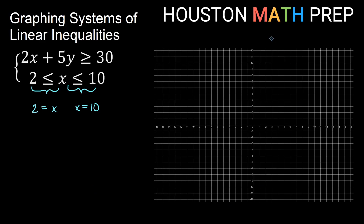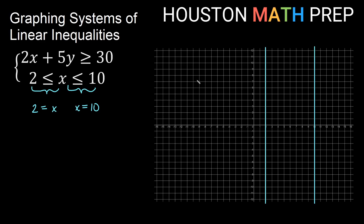The compound inequality says x is between 2 and 10. The bigger side is toward x from 2, so shade to the bigger side of 2. And from 10, the smaller side pointing toward x means shade to the left, the smaller side of 10. So we know we're in between these two vertical lines.